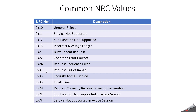NRC 31 means request out of range — it indicates an invalid data or out-of-range DID, and the tester will receive 31 in that case. NRC 33 means security access denied — if security access has failed or the ECU has not been unlocked, you will get security access denied.